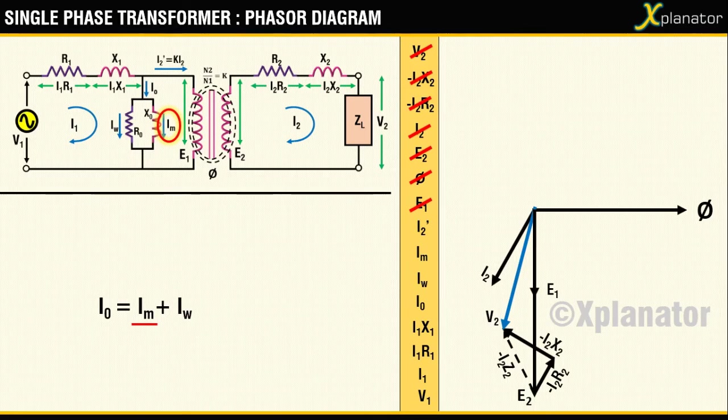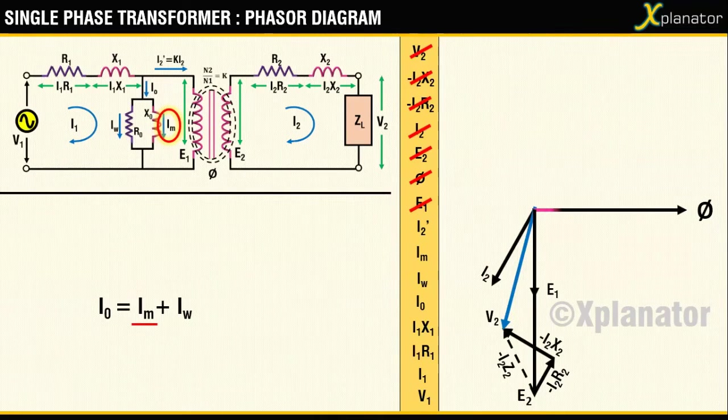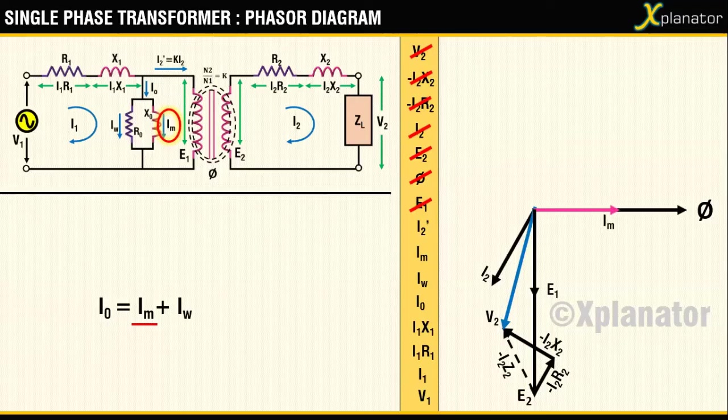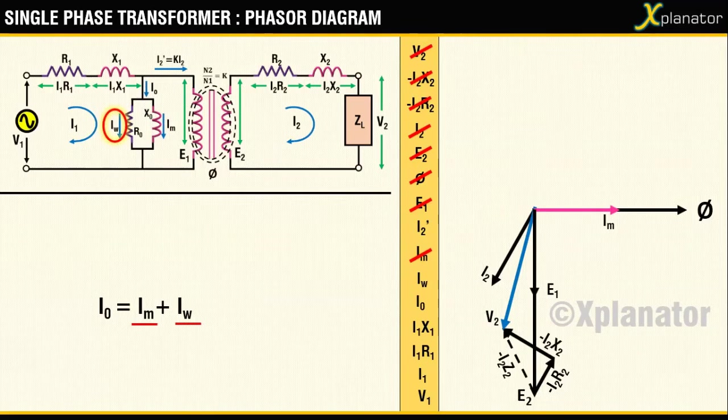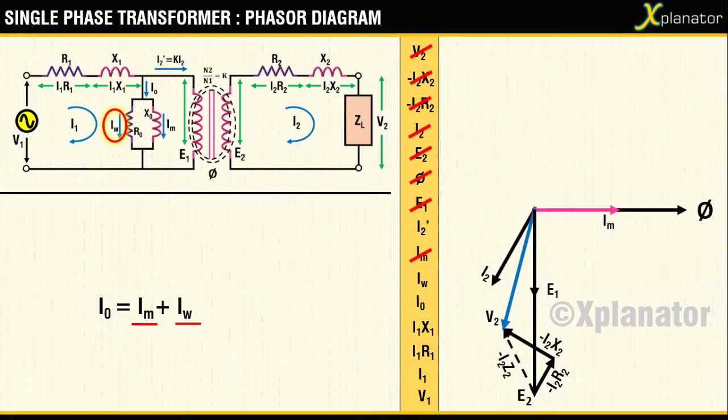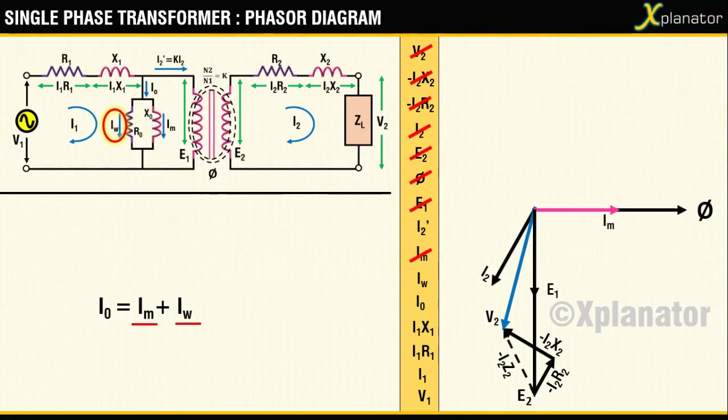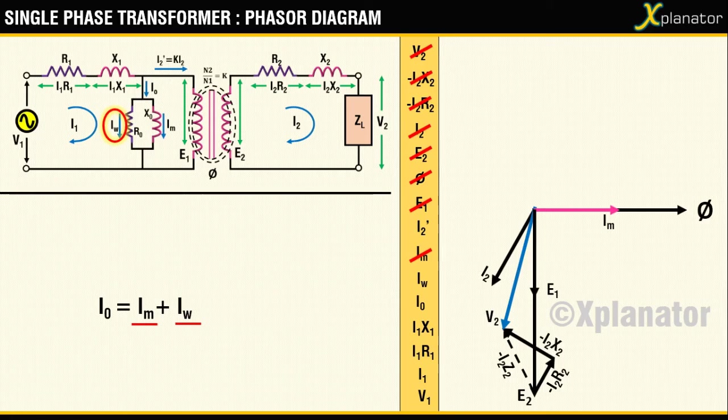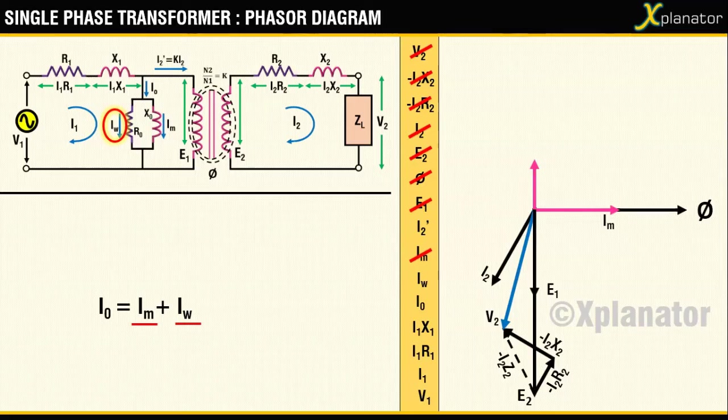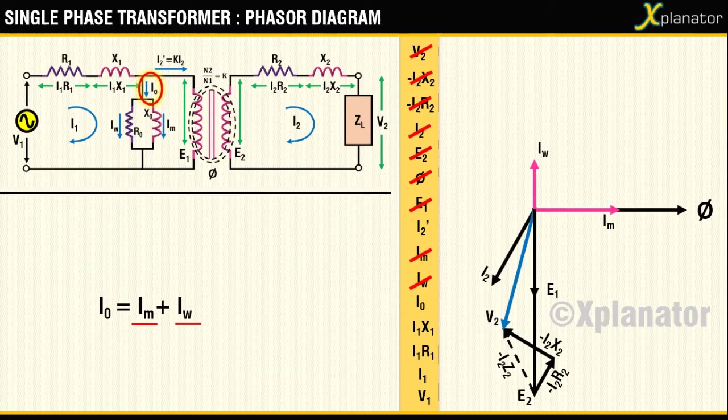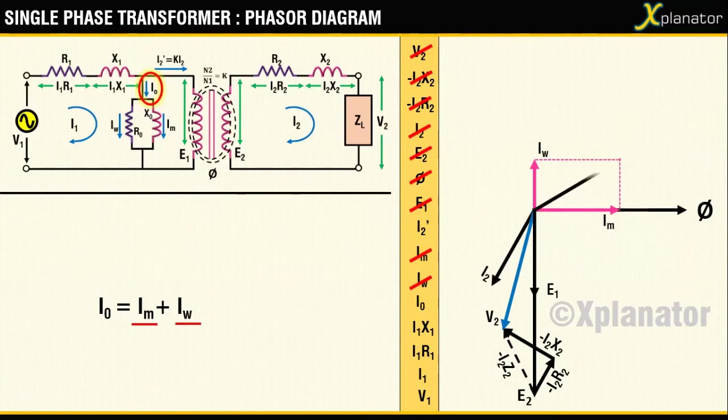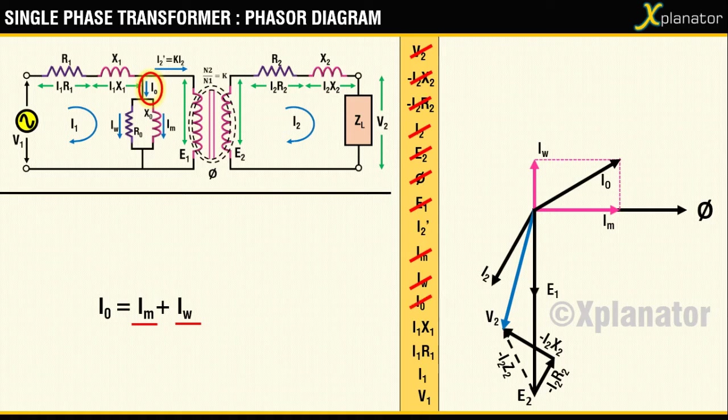Hence, it is directly related to Phi, so IM is drawn along Phi. To draw the second term, that is the working current IW, use the circuit diagram that it flows in the resistor while the previous current IM flows in an inductor. From this, you can say that they have a phase difference of 90 degrees. So if IM is plotted along Phi, IW will have a phase difference of 90 degrees pointing in the plus y direction. The vector addition of these two will give you a resultant of no-load current I0.